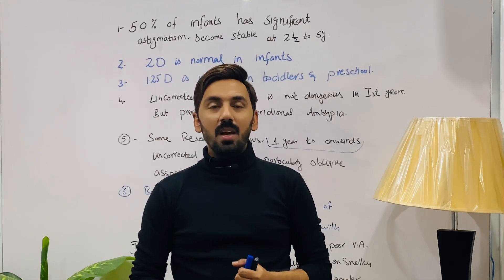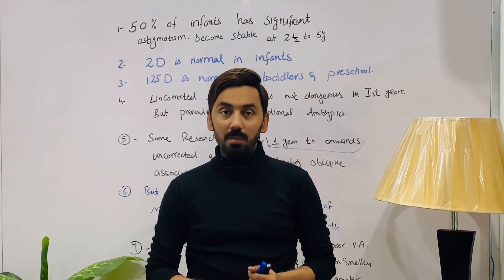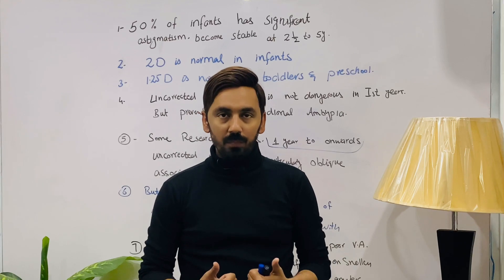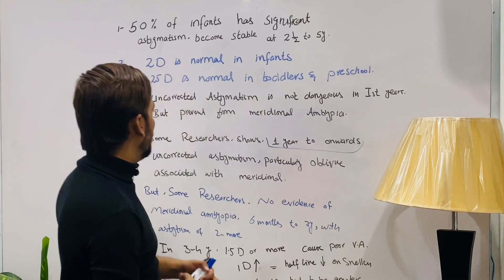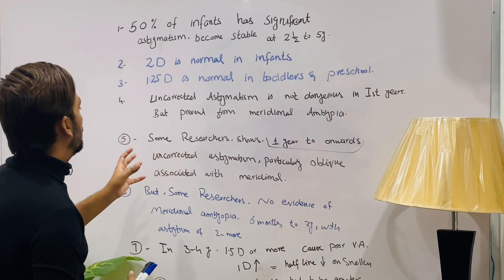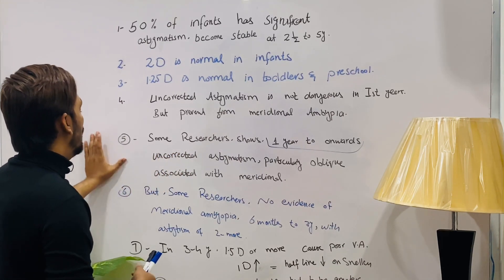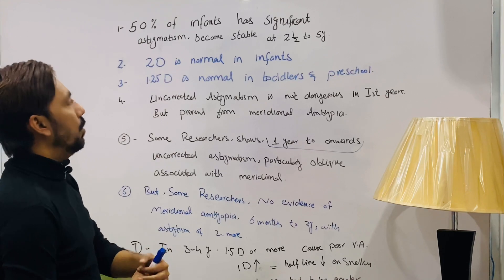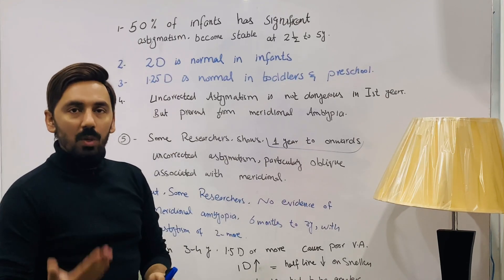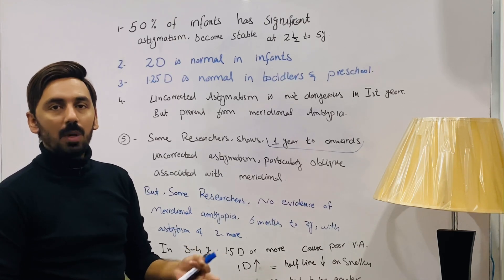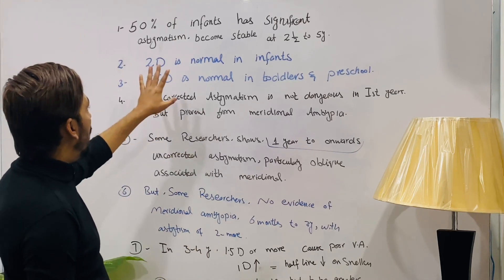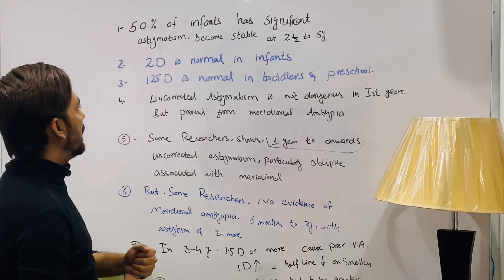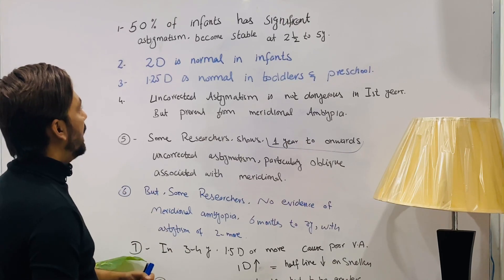This video is on astigmatism. In astigmatism there are two different focal points. Now let's discuss the different guidelines in terms of astigmatism from newborn to 10 years of age. Research shows that 50% of infants — the age from newborn to one year — have significant astigmatism.